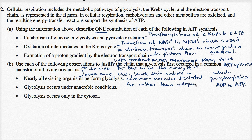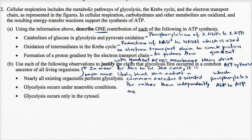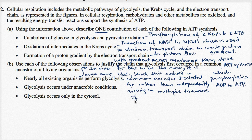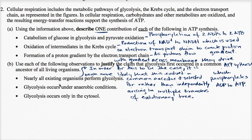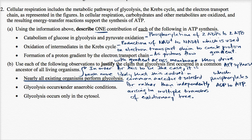Then independently arising in multiple branches of evolutionary tree. The fact that nearly all existing organisms perform glycolysis. In theory, it could have happened independently, just because this gets selected so strongly, but if something happens in nearly all organisms, it's very likely that it evolved at a very early stage, in a kind of primitive ancestor organism, and that was selected for, and it continues to be selected for, and that's why we continue to see it.